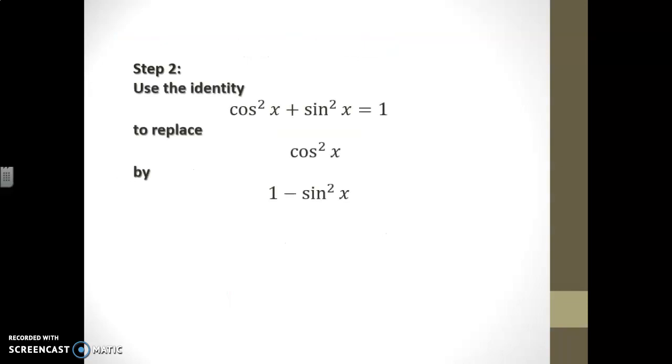In step 2, we're going to use the identity cos squared x plus sine squared x equals 1 to replace all remaining cos squares by 1 minus sine squared. Therefore our new integral will look like 1 minus sine squared times cos of x dx.